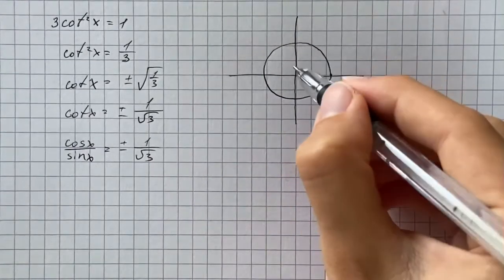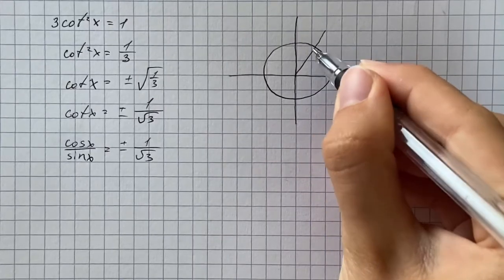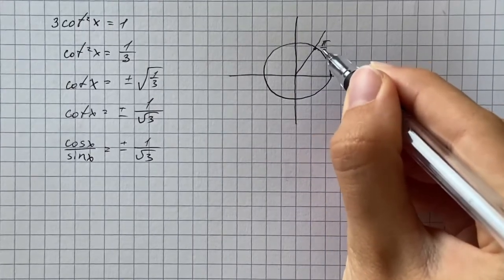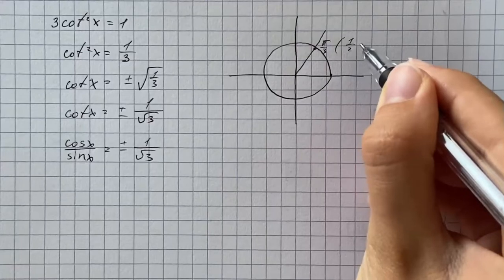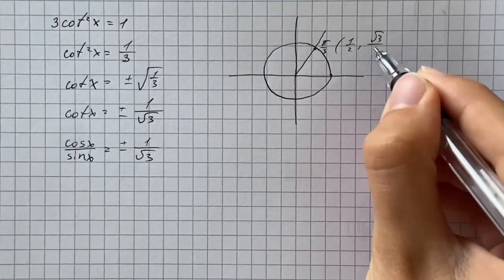So at first we're going to consider the angle pi over 3, which has coordinates 1 half comma square root of 3 over 2.